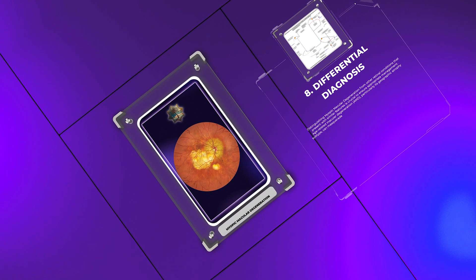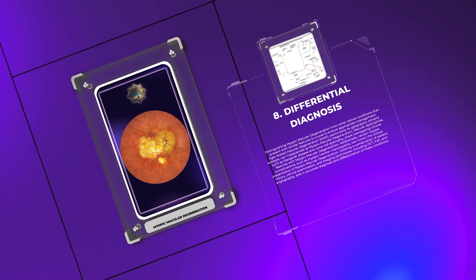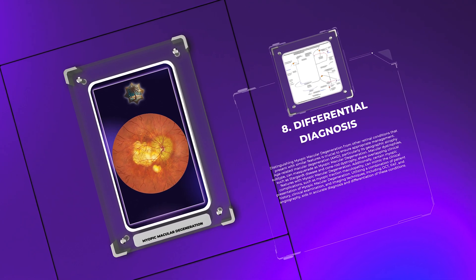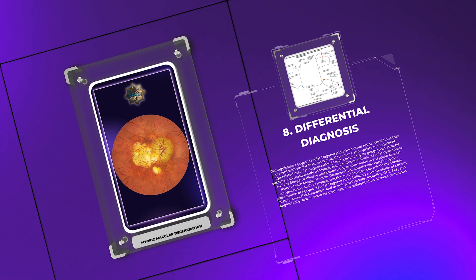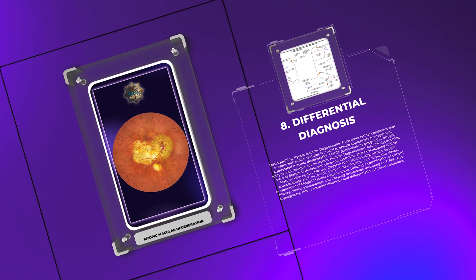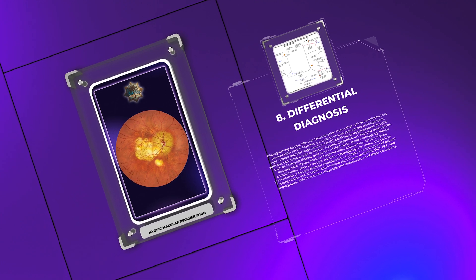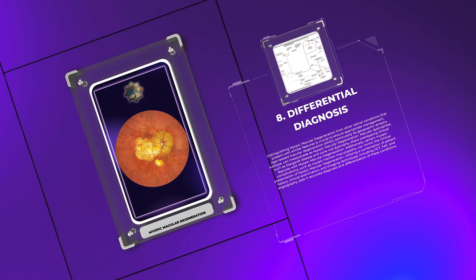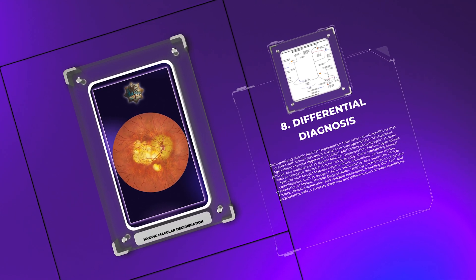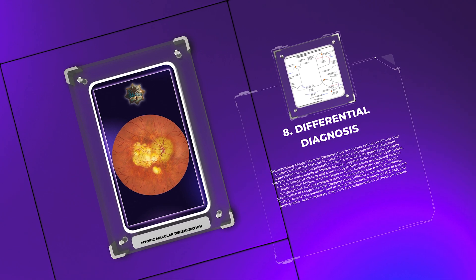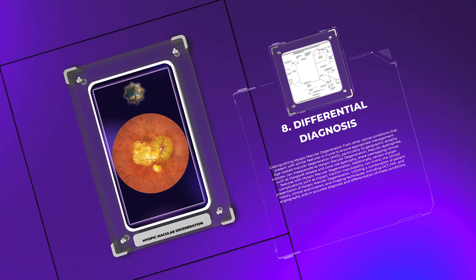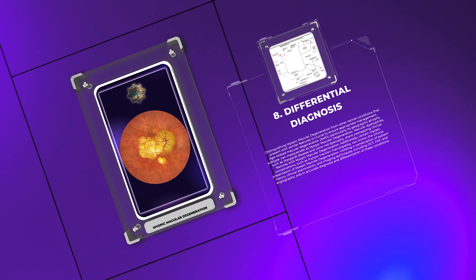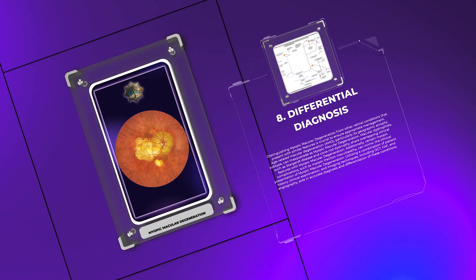Distinguishing myopic macular degeneration from other retinal conditions with similar features is crucial for appropriate management. Age-related macular degeneration (AMD), particularly its geographic atrophy subtype, can masquerade as myopic macular degeneration. Macular dystrophies such as Stargardt disease and cone-rod dystrophy share overlapping clinical features. Additionally, myopic complications such as myopic traction maculopathy can mimic the clinical presentation. Utilizing a combination of patient history, clinical examination, and imaging techniques including OCT, FAF, and angiography aids in accurate diagnosis and differentiation.